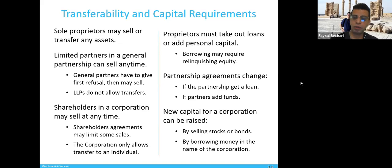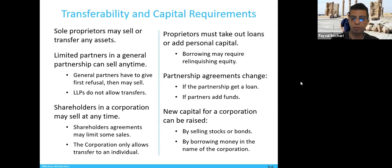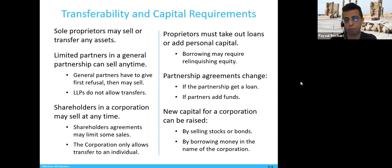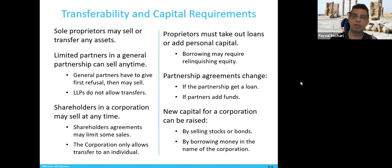If the partnership gets a loan from outside, the whole partnership owes money to the outside and they keep the same share percentages. But if one partner adds more funds, they will have a greater percentage in the company. For a corporation, new capital can be raised by selling stocks and bonds, or borrowing money in the name of the corporation.